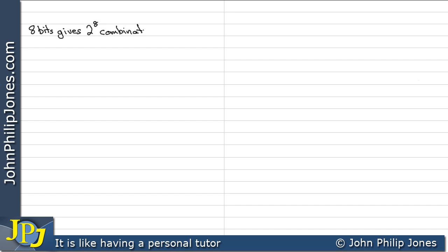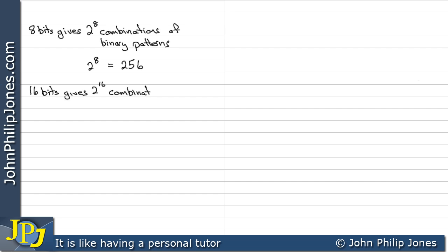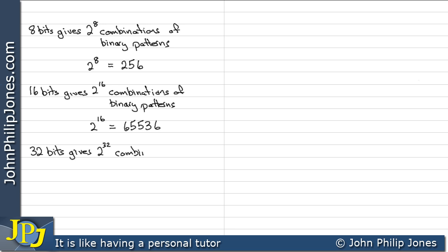8-bit patterns can give 2 to the 8 combinations of binary patterns, and 2 to the 8 is 256. 16 bits gives 2 to the 16 combinations of binary patterns, and 2 to the 16 is 65,536. And 32 bits gives 2 to the 32 combinations of binary patterns, which gives us this large number here.